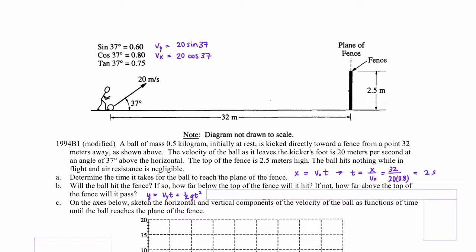Plugging in our values, we're going to use only the velocity in the y direction for V. Looking at the value at the top, that's going to be 20 times sine of 37, or 20 times 0.6. Plugging in the values, we get that the ball will pass the fence at a height of 4 meters, and because the fence is 2.5 meters tall, that means it will clear the fence by 1.5 meters.